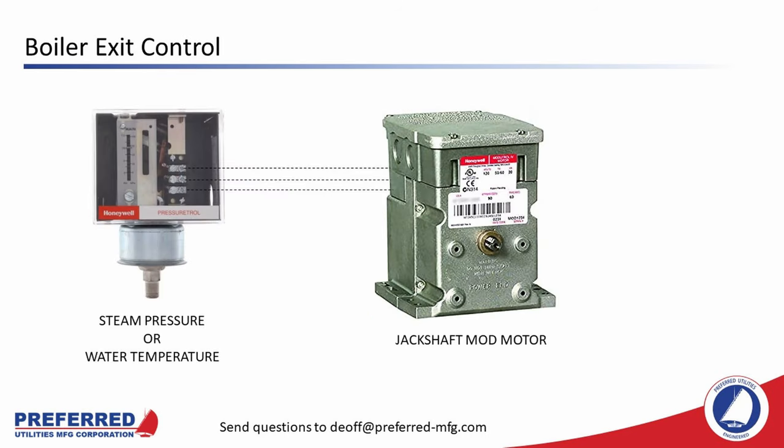In the very smallest boilers, this system gets simplified to two components: a Honeywell L91 direct-sensing steam pressure or hot water sensor/controller and a mod motor that turns a jackshaft. Usually there is an auto-manual switch and a potentiometer for manual control of the firing rate. Back in what I'd call the middle Bronze Age of my career, you'd see these controls on boilers as large as 500 to 600 horsepower. Nowadays, you seldom see this setup on boilers larger than 200 horsepower. Don't know what a jackshaft is? It's coming up in about five slides.